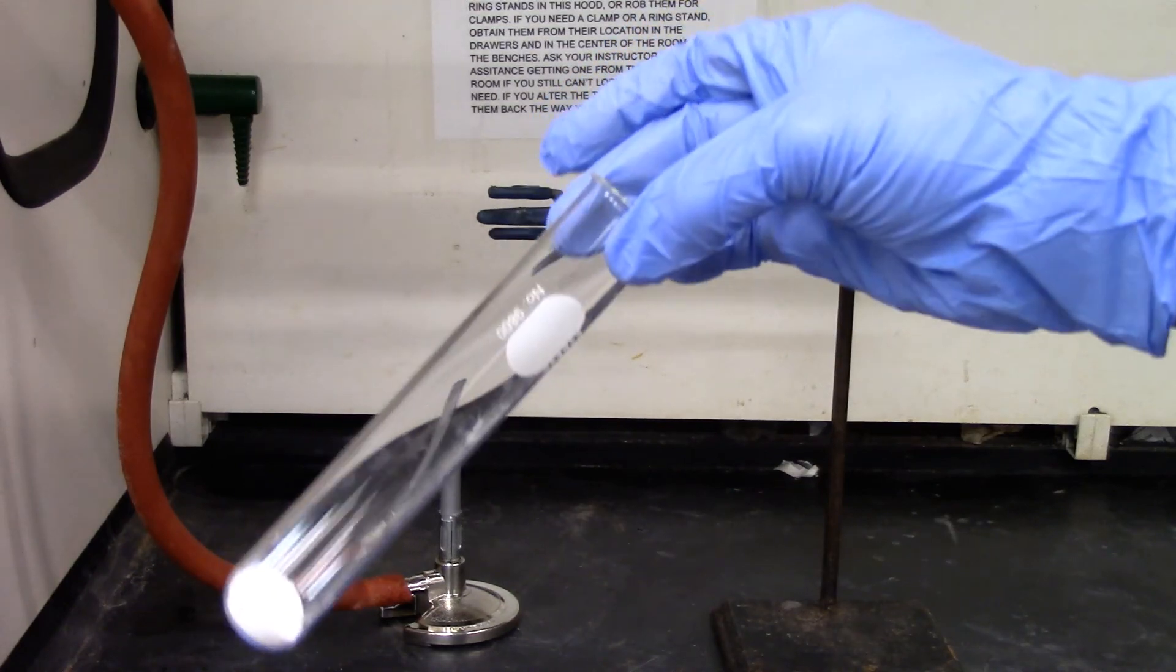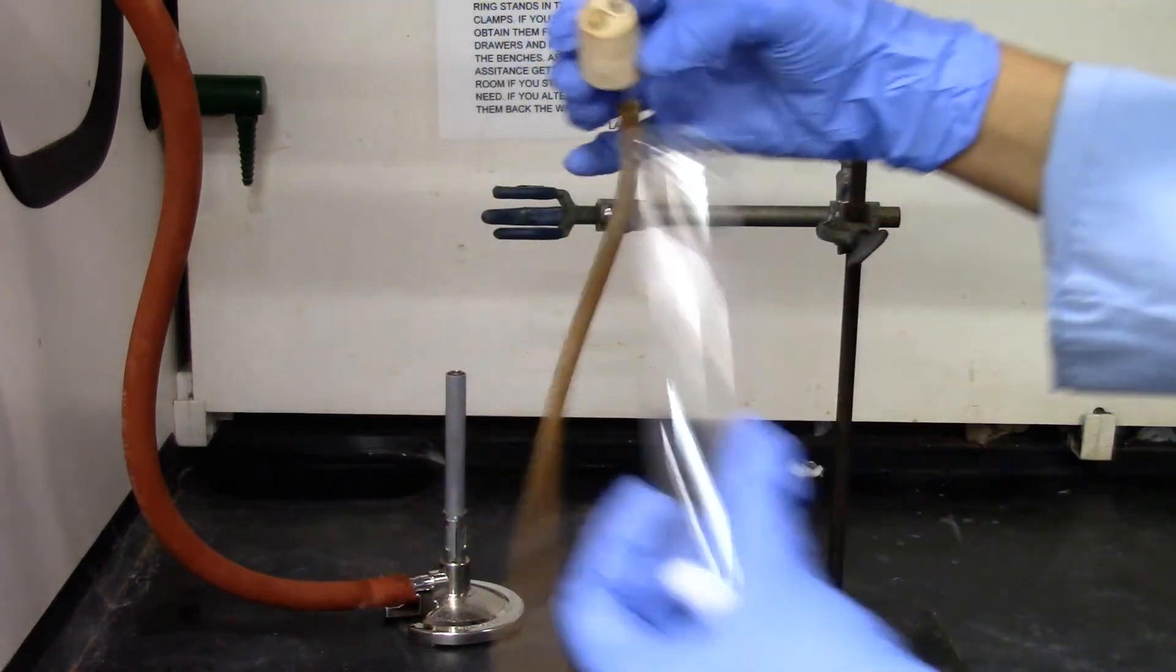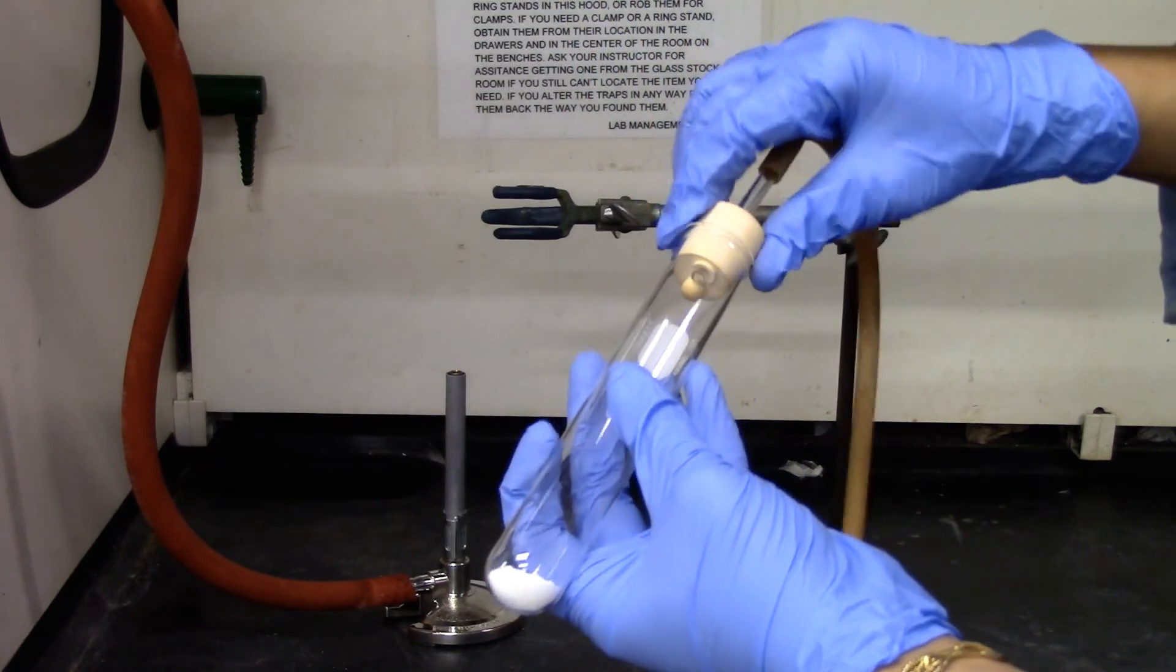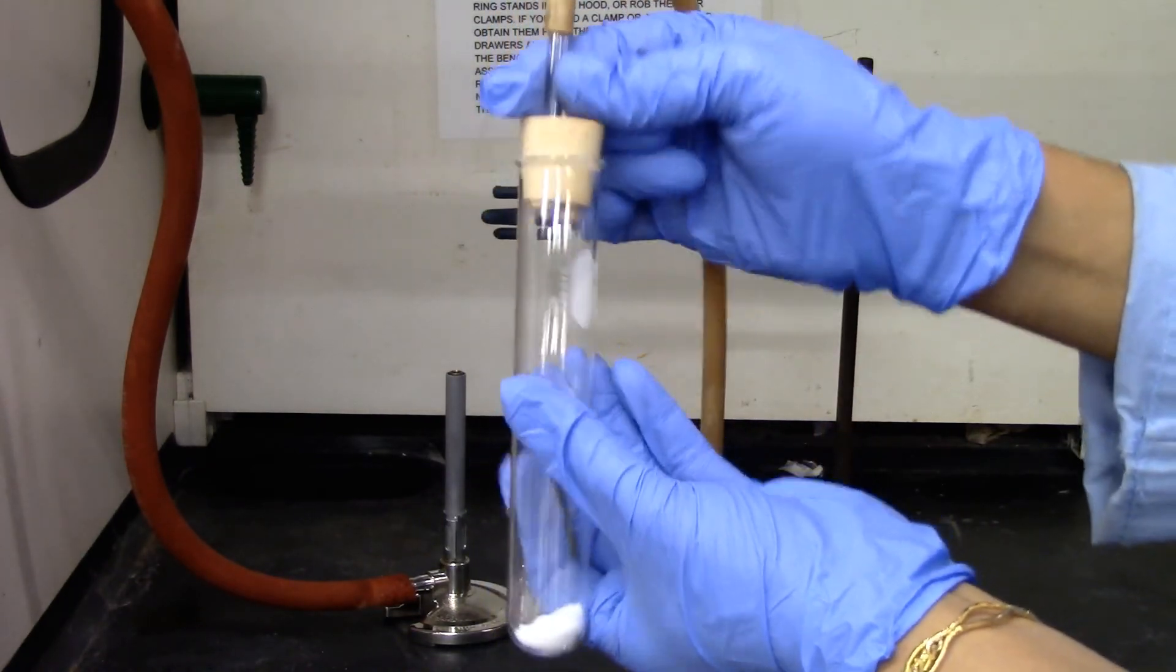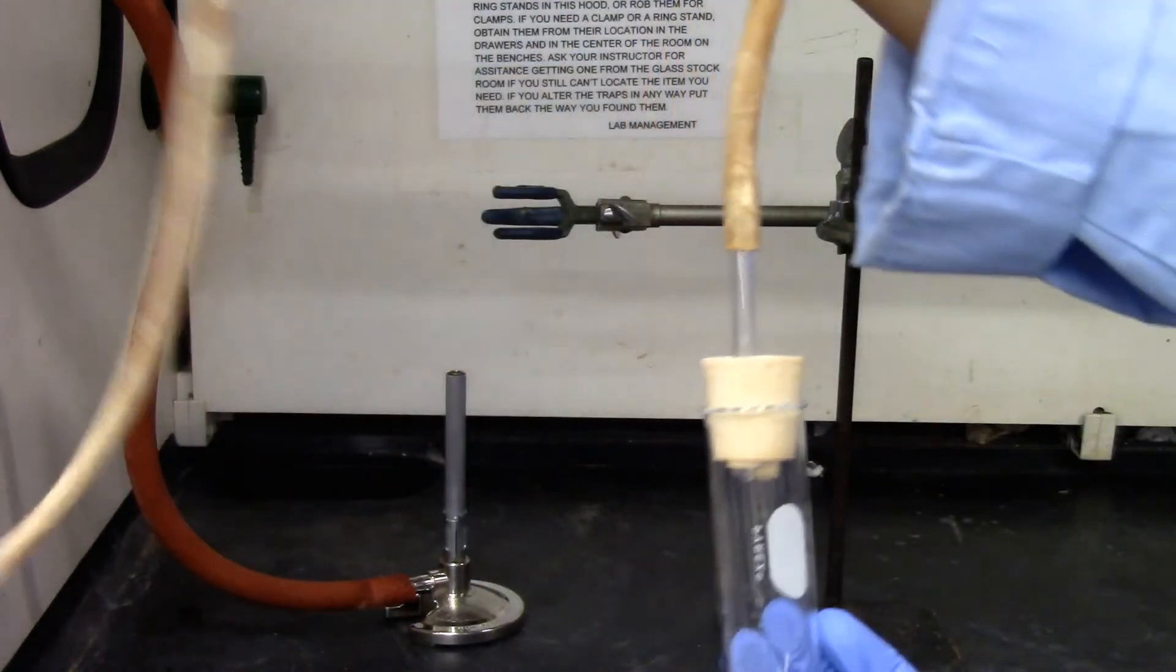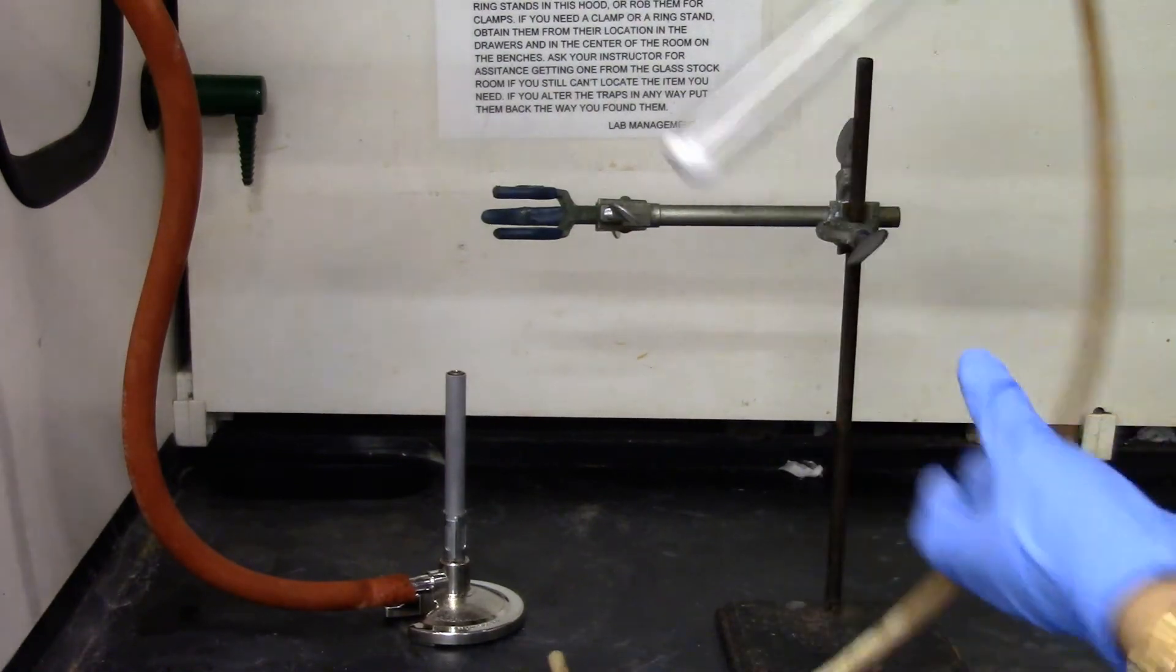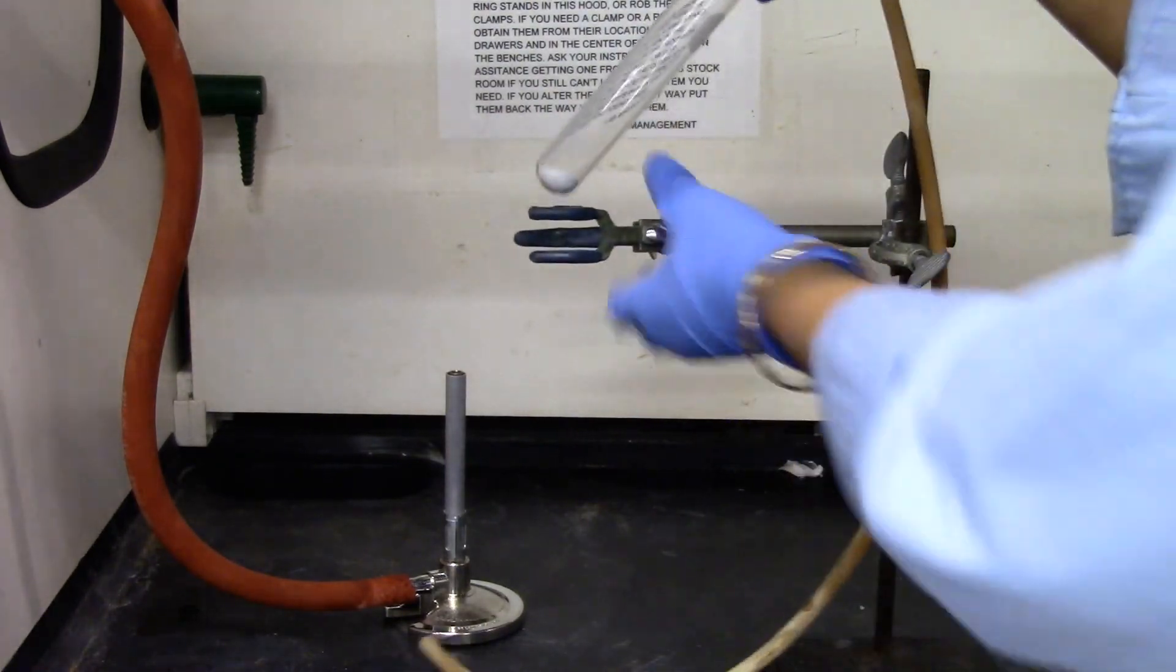So this is my test tube with the baking soda. I'm going to attach a rubber stopper with a glass insert and connect it with the tubing, and I'm going to clamp it on the ring stand.